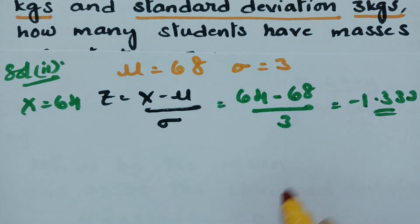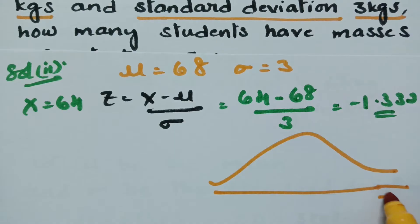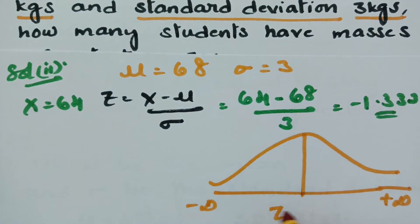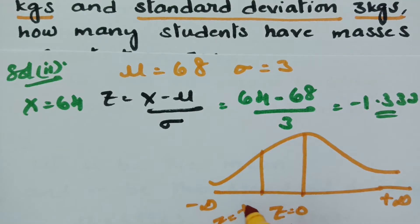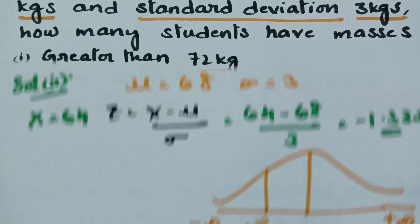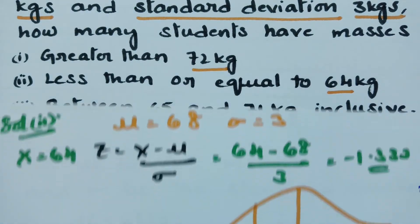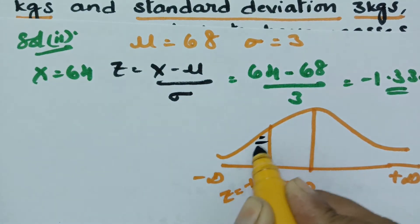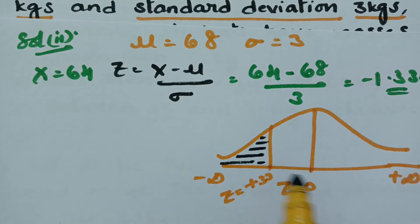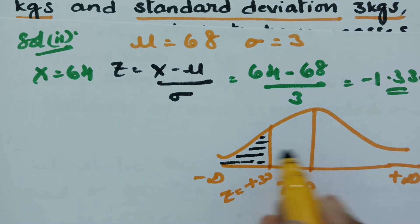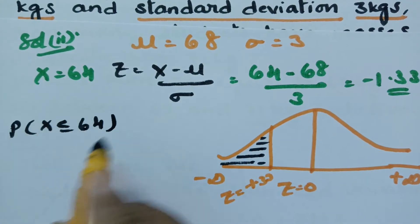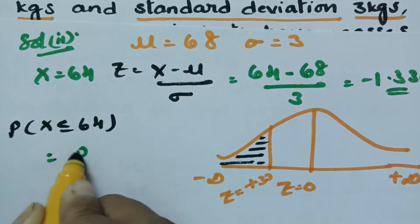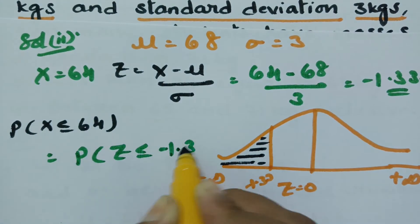Presenting this on the normal curve: the curve tends to plus infinity on one side and minus infinity on the other, with z equals 0 at center. Since the value is negative, z equals minus 1.33 is towards the left of the ordinate. Less than means towards the left side, so this is the required region. The probability of x less than or equal to 64 equals the probability of z less than or equal to minus 1.33.